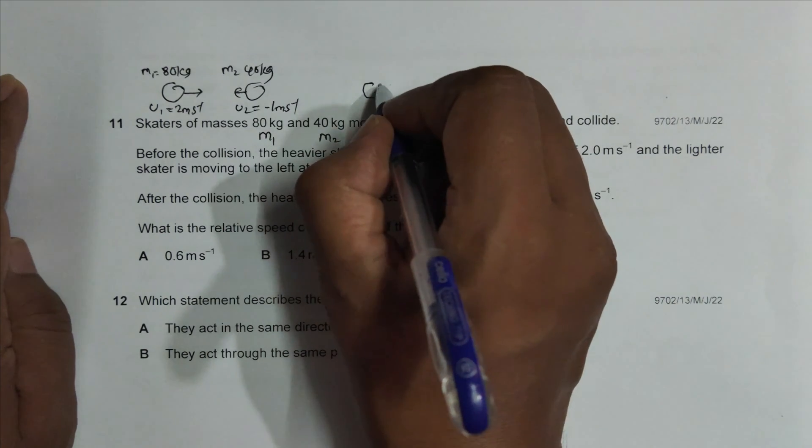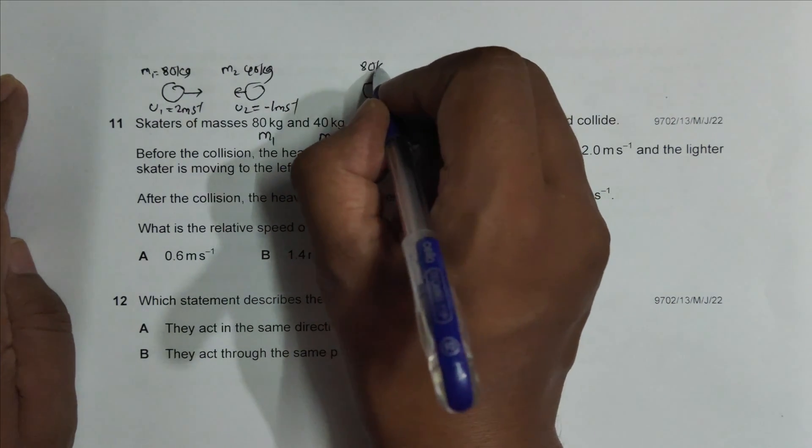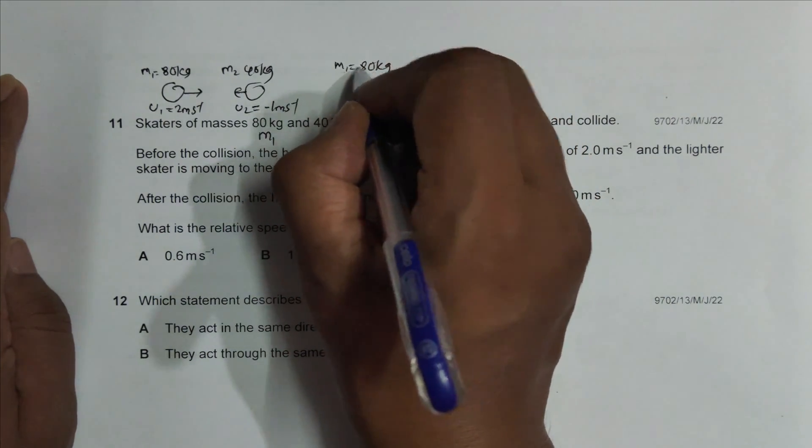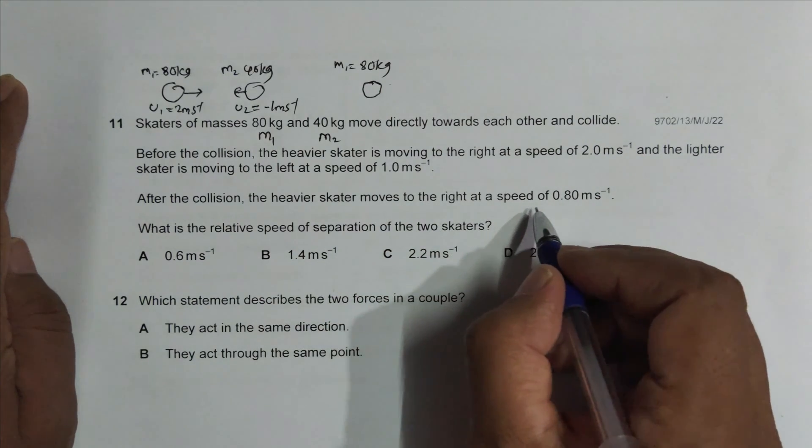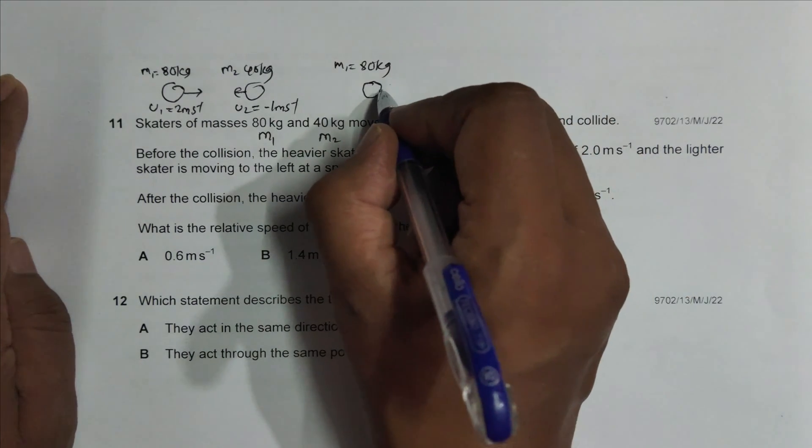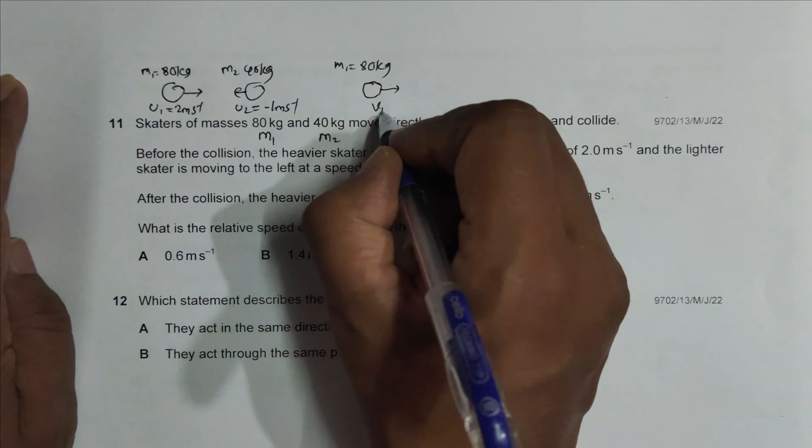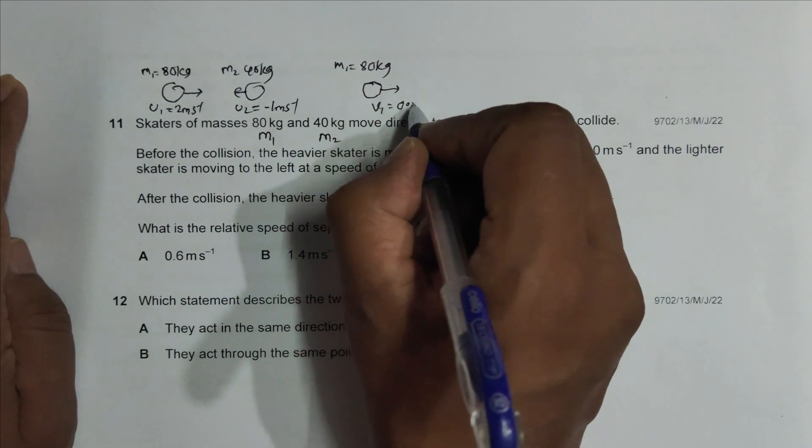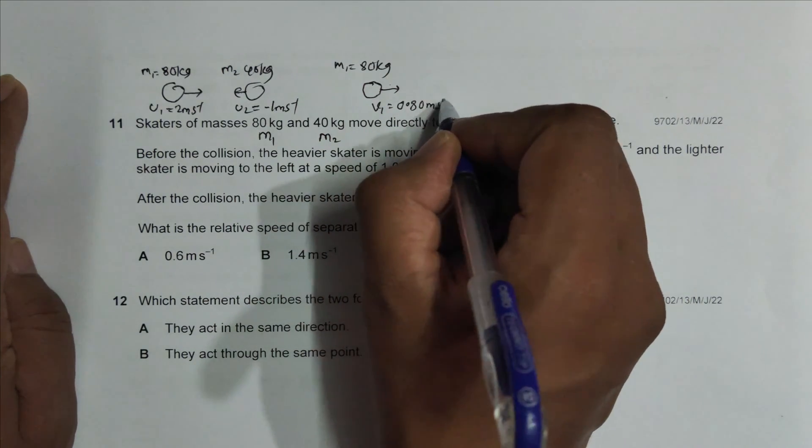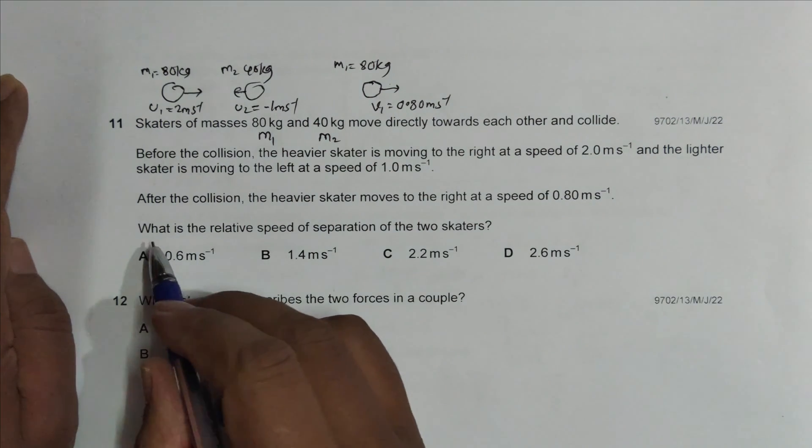After the collision, the heavier mass, which is m1, will be moving to the right at the speed of 0.80 meter per second. So v1 is equal to 0.80 meter per second. What is the